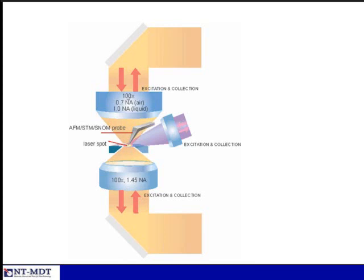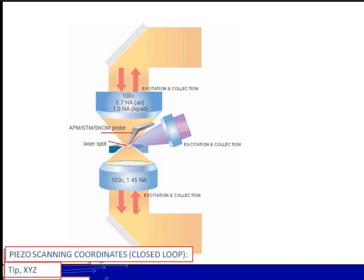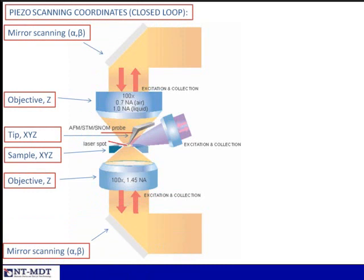The most universal configuration integrates AFM with multiple optical paths simultaneously. This existing system, working at several NTMDT customers, combines bottom illumination with NA up to 1.49 or 1.5, a top lens at NA 0.7 in air, and a side high-NA lens. The tip can be placed at the focal point of all three lenses, enabling any combination of excitation and collection: top excitation/bottom collection, side excitation/top collection, and so on. All scanners are closed-loop piezo scanners with nanometer precision and temporal stability.